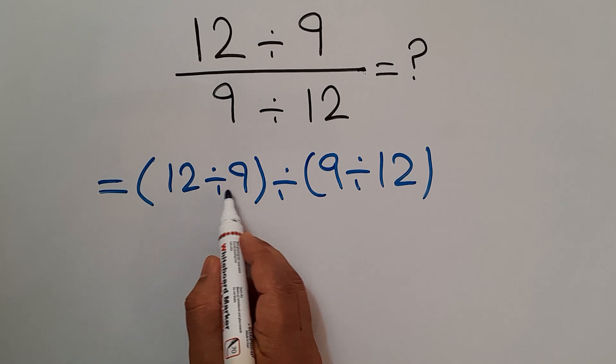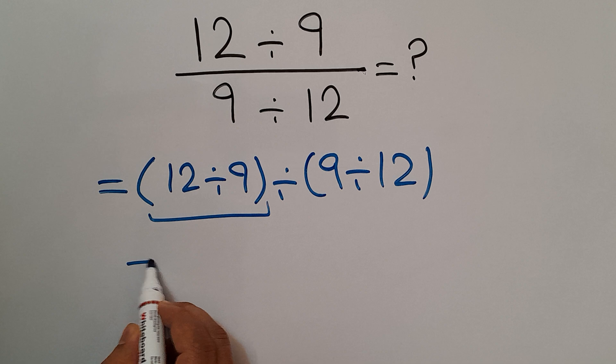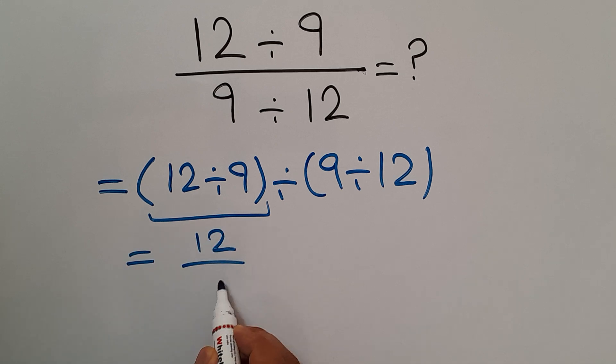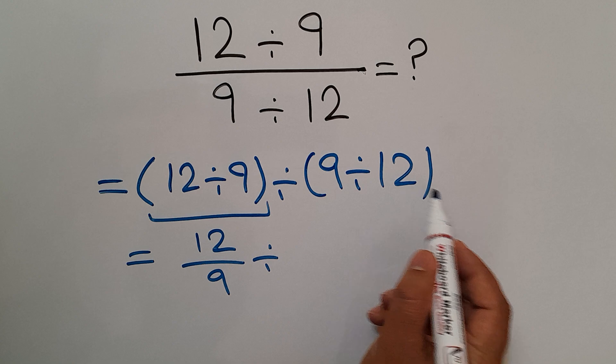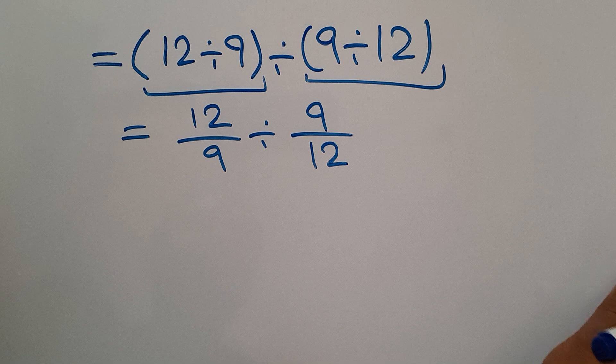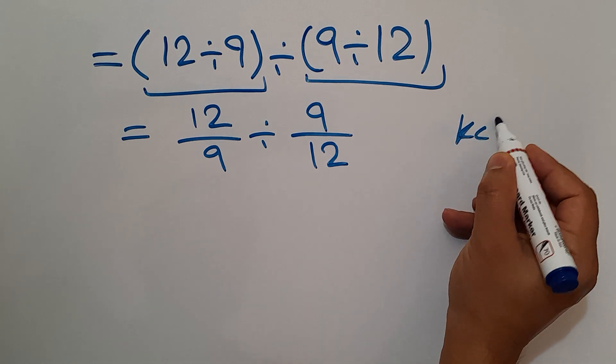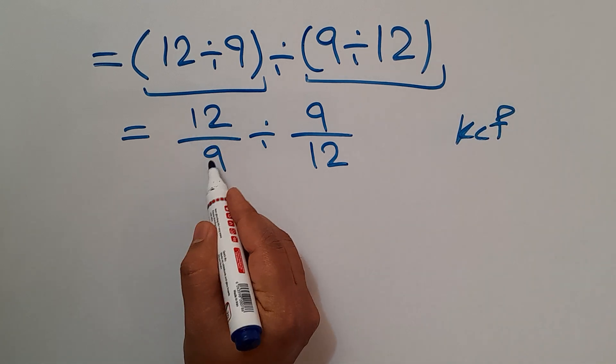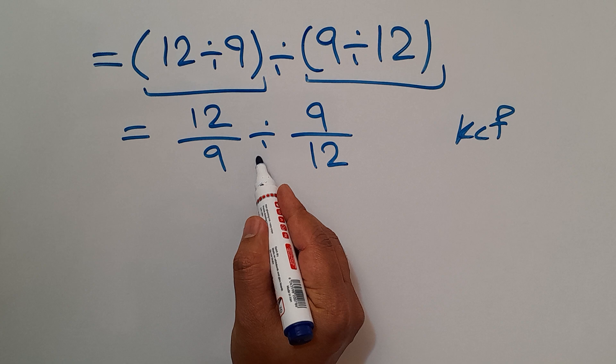So 12 divided by 9 can be written as 12 over 9, divided by 9 divided by 12 can be written as 9 over 12. Now according to the KCF rule: keep the first fraction, change the division to multiplication, and flip the second fraction.